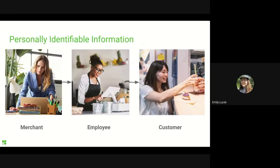To start discussing data minimization, let's first take a look at PII — personally identifiable information. Clover stores a lot of it, such as names, addresses, and phone numbers. There are degrees of separation with PII. Consider a first name: how personal it is for an app to have the merchant's first name versus an employee's first name versus a customer who's just passing through. As you get more distant, concern over personal information can increase — the end customer may have no idea what apps a merchant uses or what those apps could do with their information.